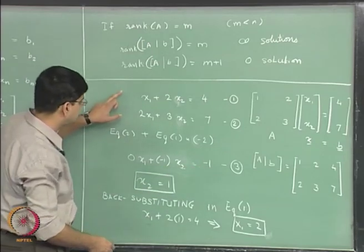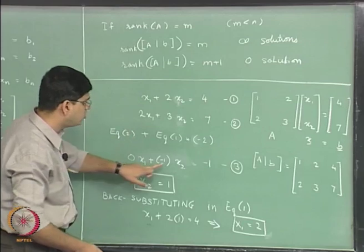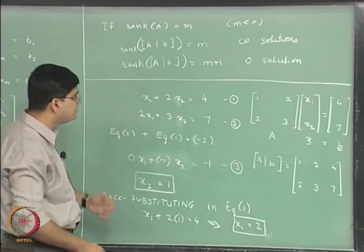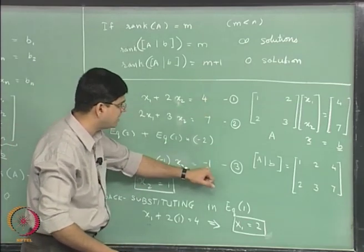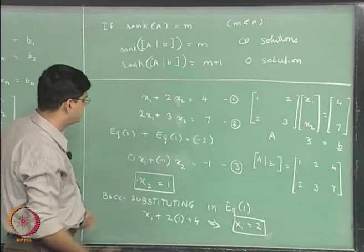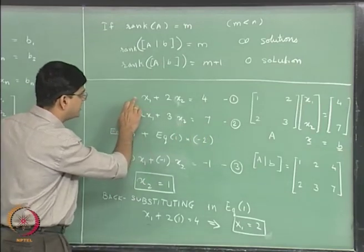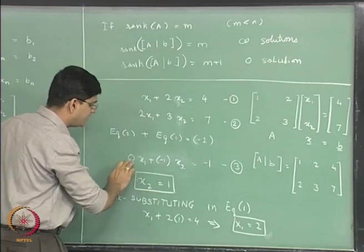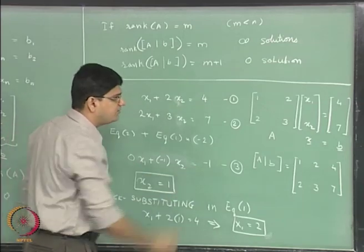And equation 2, if we again go back to this, equation number 3 is 0, minus 1, minus 1. Our matrix A is going to consist of 1, 2, 0, minus 1. Our matrix B will consist of 4, minus 1.